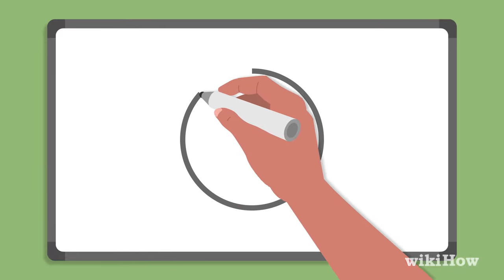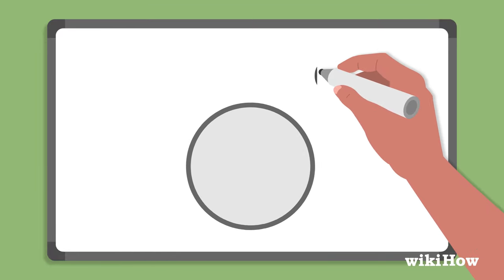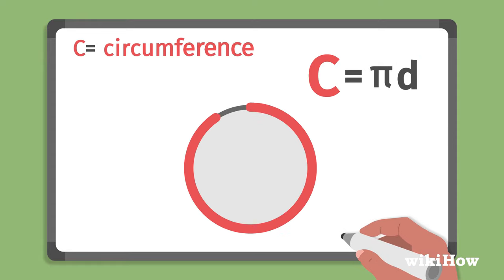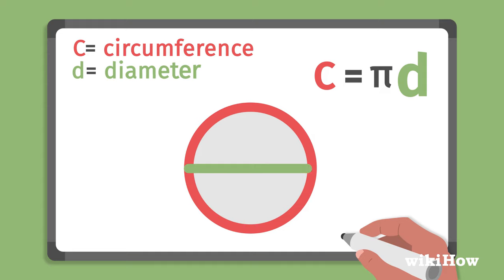To calculate the circumference of a circle, use the formula C equals pi times D, where C is the circumference, D is the diameter, and pi is 3.14.